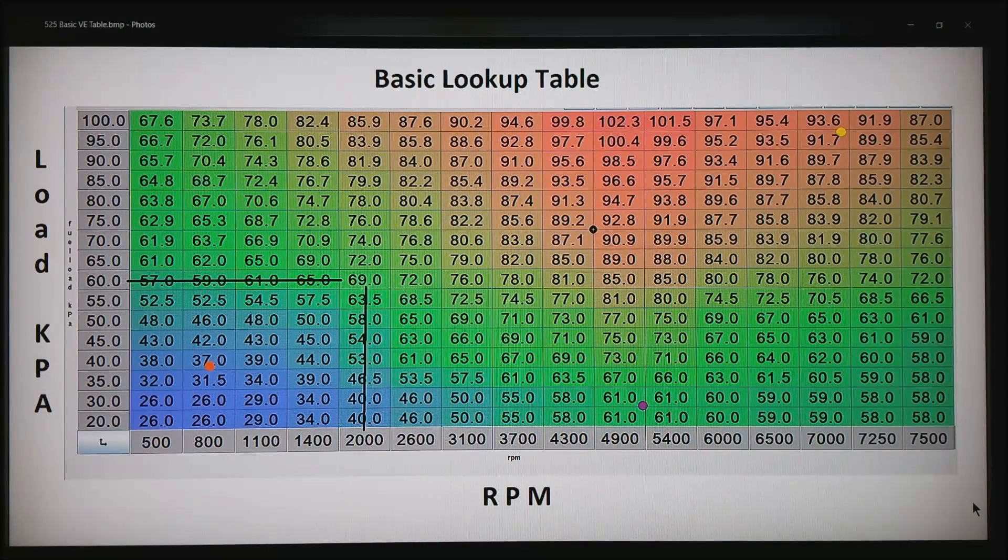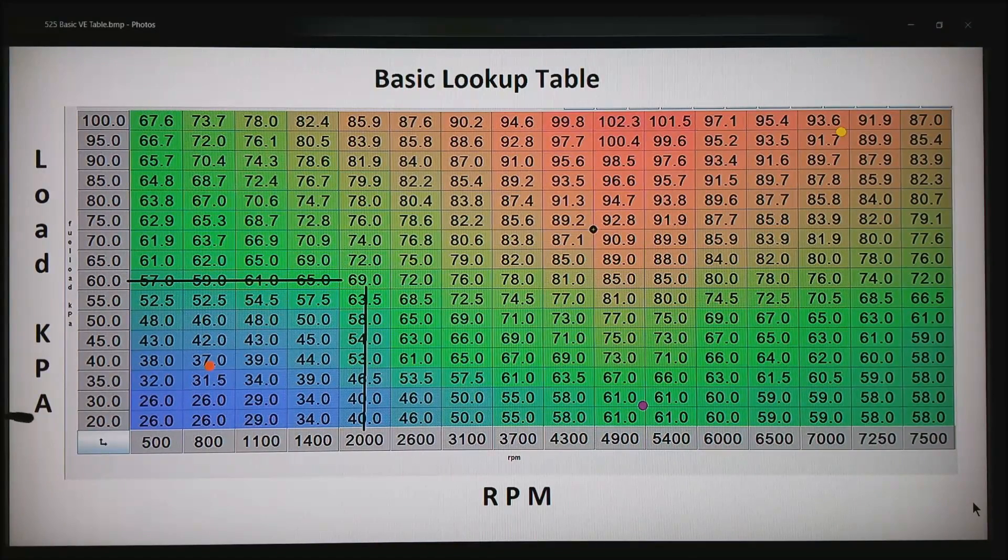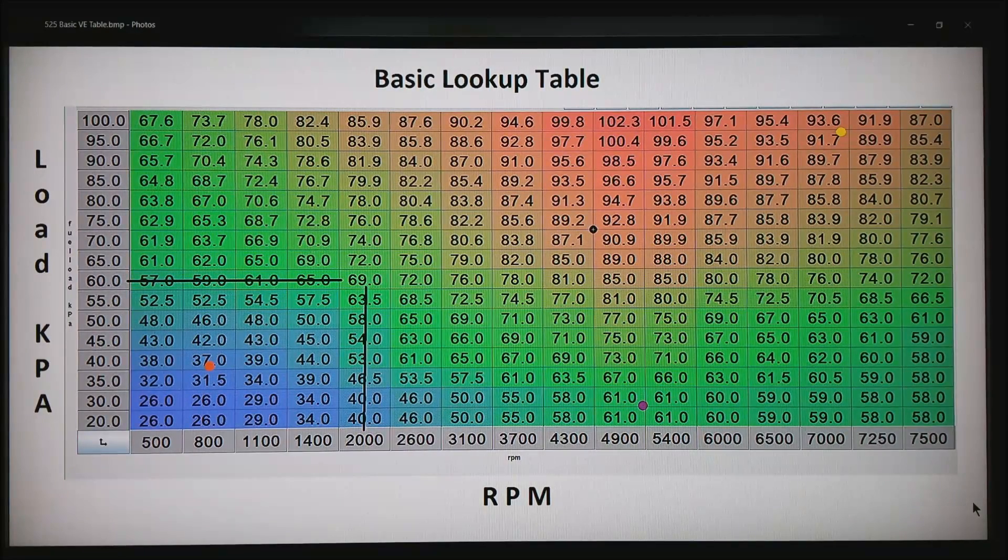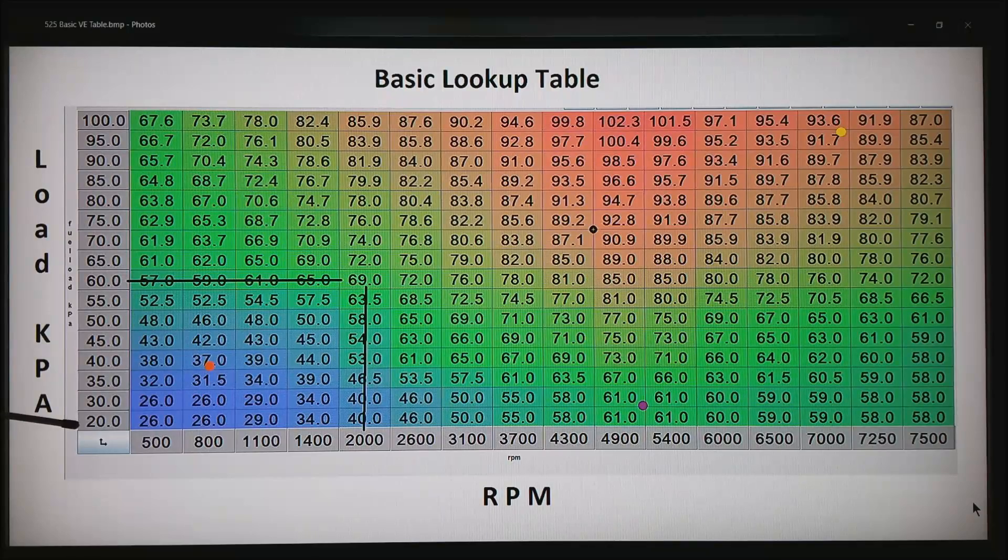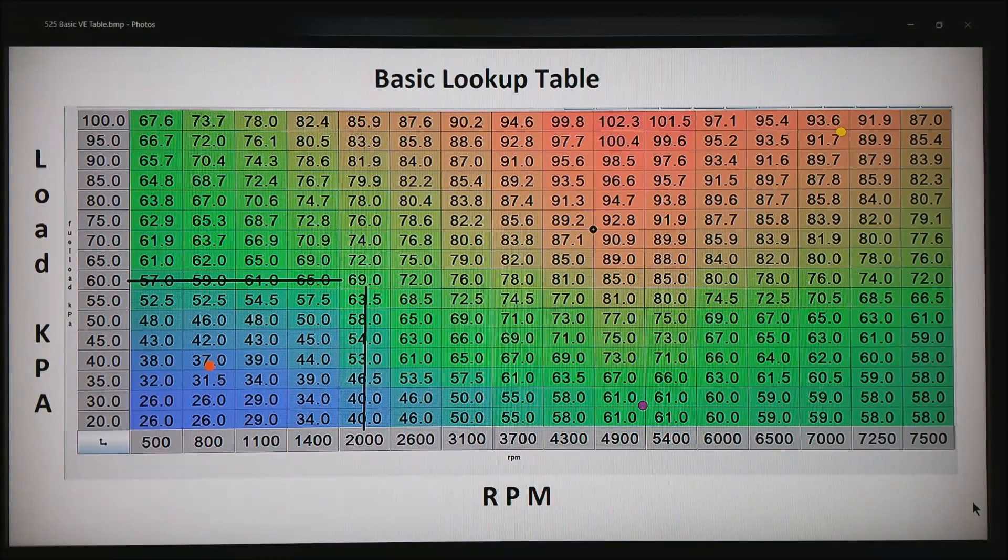Load can be manifold absolute pressure, most commonly measured in kilopascals or kPa, running from about near vacuum or about 20% air up to 100 kPa on a normally aspirated motor. This would be full throttle and this would be like in a downshift.